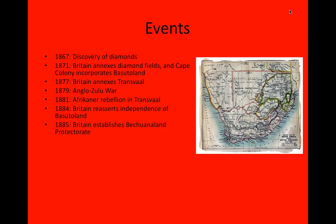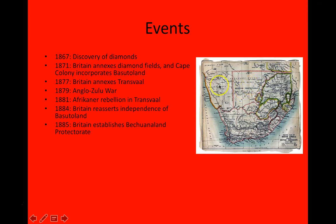In 1885, Britain established a protectorate over Botswanaland, and it did this because this corresponded in time with the Berlin Conference. This was the occasion when various European powers got together and divided up the map of Africa into different spheres of influence or colonial empires. The Germans laid claim at that point to what they called Southwest Africa, what is now known as Namibia. Fearing that the Afrikaners, who were more akin culturally to the Germans than to the British, would open up a direct linkage and cut South Africa off from territories to the north, the British established this protectorate to create a wedge between the Germans and the Afrikaners.